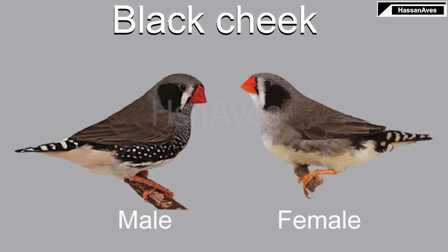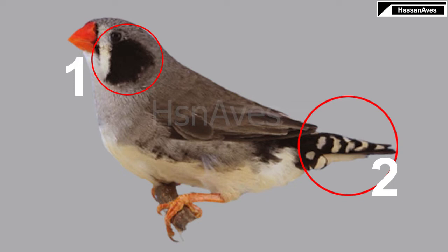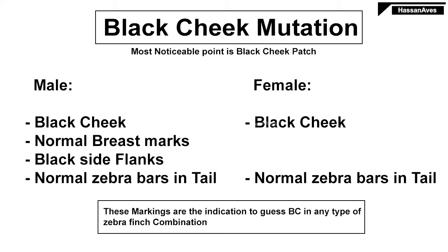This is the black cheek mutation. In this mutation, you can identify a male by 3B markings. In the first picture you can see the black cheek patches, while in the second picture you can see black flanks. In some birds you can see black and orange mixed flanks — those are just poor markings. In the third picture you can see zebra tail bars just like in common zebra finch. In the female, the main noticeable point is its cheek patch; tail markings are the same as males. By these markings you can identify the black cheek mutation easily in any kind of zebra finch combination.